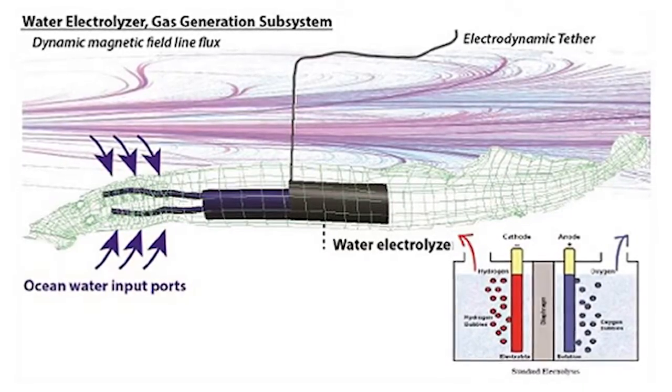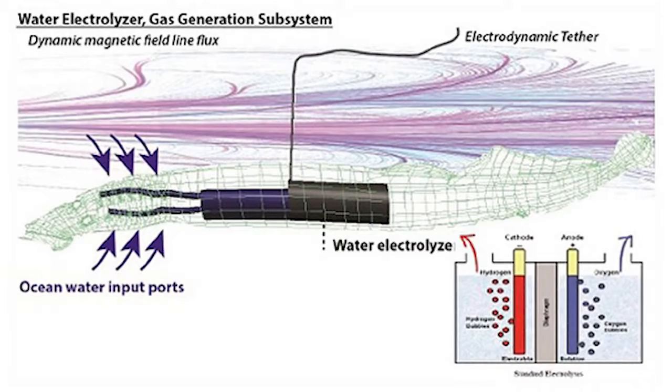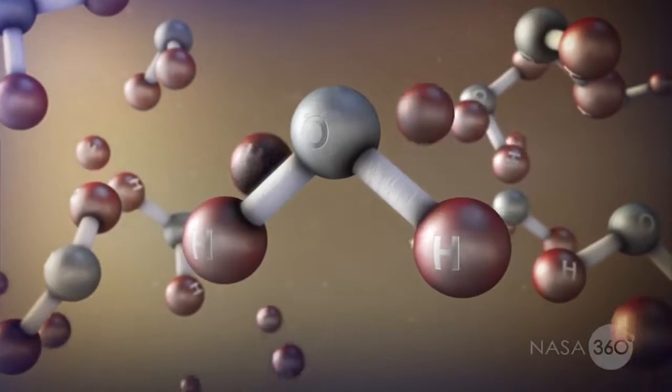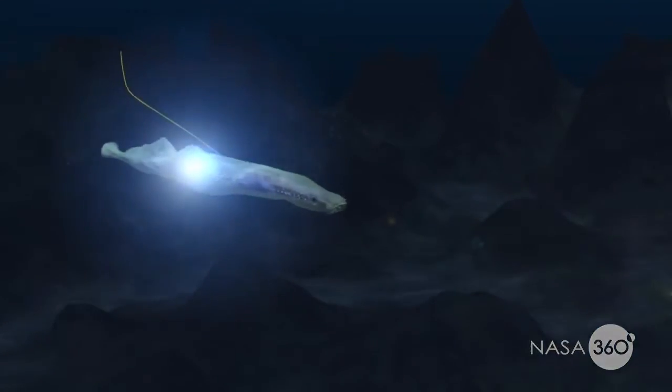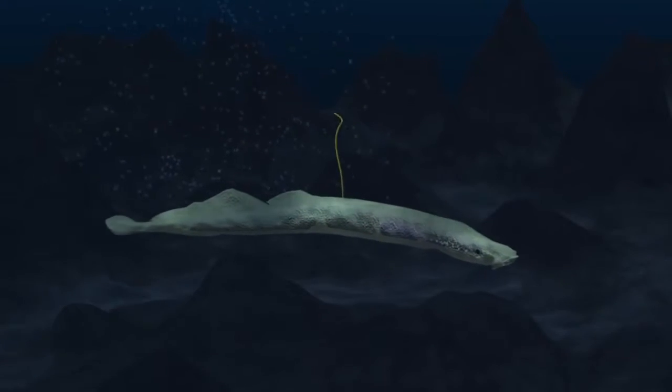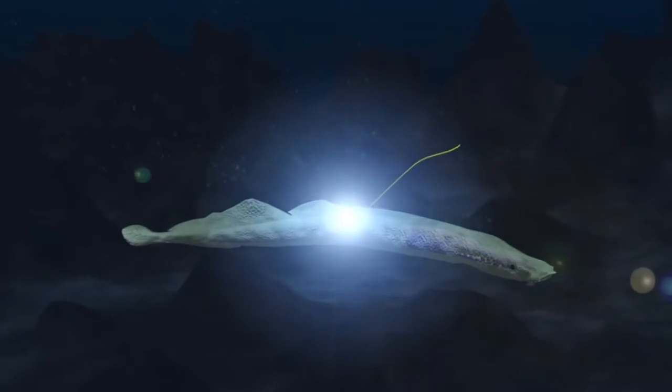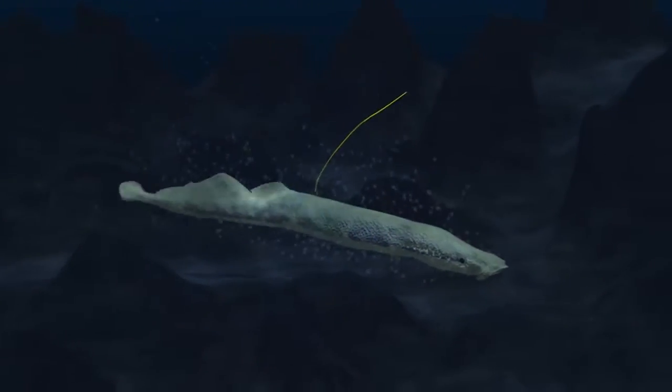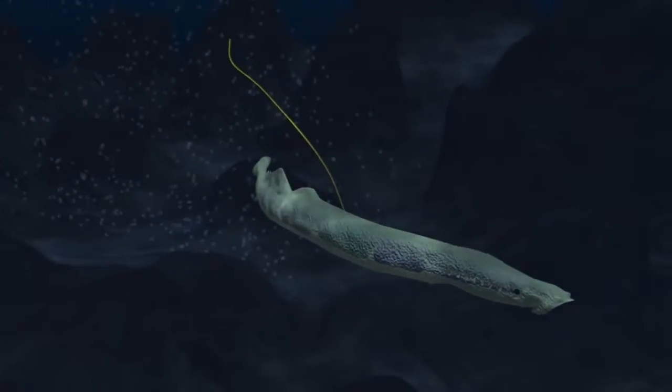We use that electrodynamic tether power to split water molecules into hydrogen and oxygen components. That combustible gas is then directed into a plenum where it's detonated, and that process produces a shape change in the soft body of this rover. So it's this detonation inside the body that changes the shape and causes it to move its body through the water.